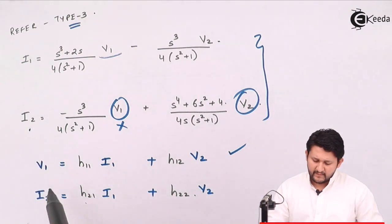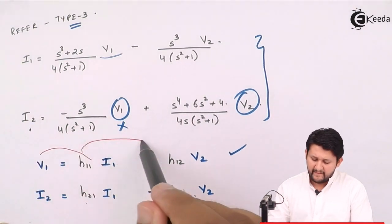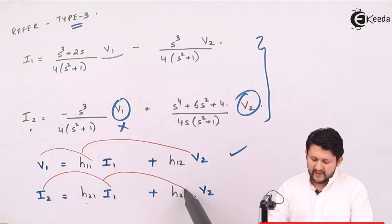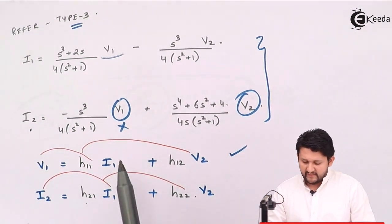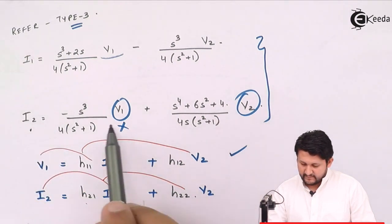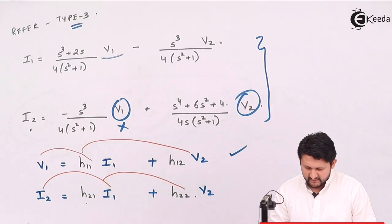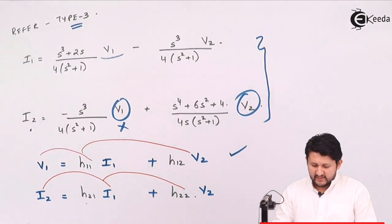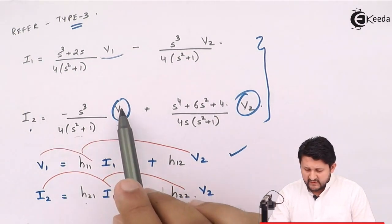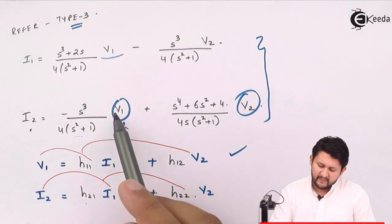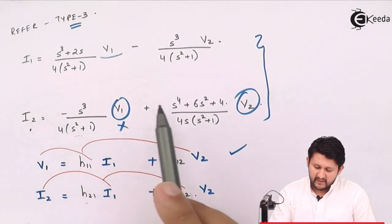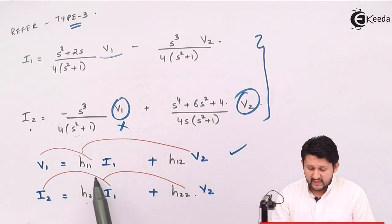I need V1 in terms of I1 and V2, and I2 in terms of I1 and V2. If I observe the Y parameter equations carefully — from the first equation if I keep V1 on one side and shift this parameter over, I get V1 in terms of I2 and V2, but that's not what's needed. V1 must be in terms of I1 and V2.